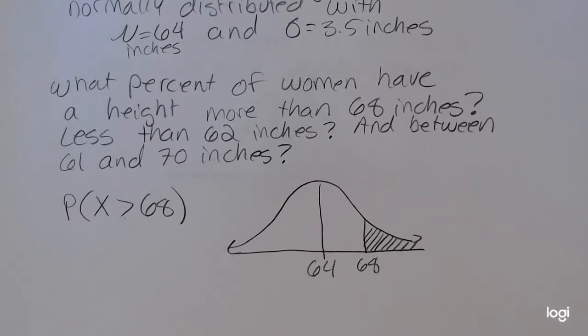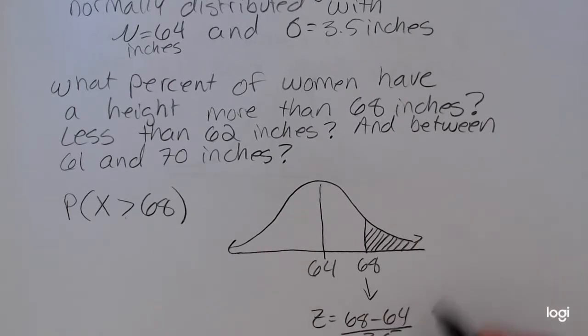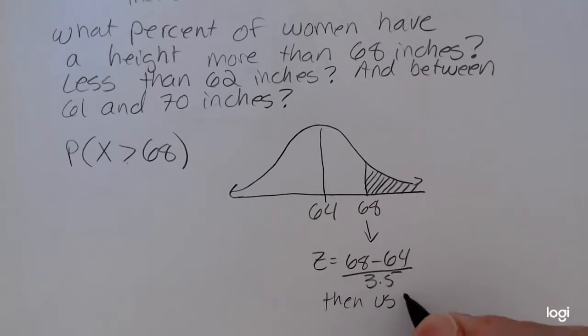If you wanted to use the z-table for this, you would have to standardize. So if you wanted to do that as a z-score, this would be 68 minus 64 divided by 3.5, and then use the z-table or the standard normal table.